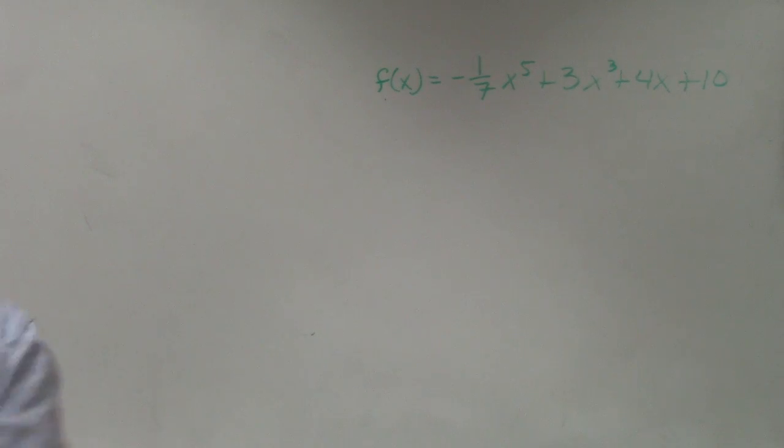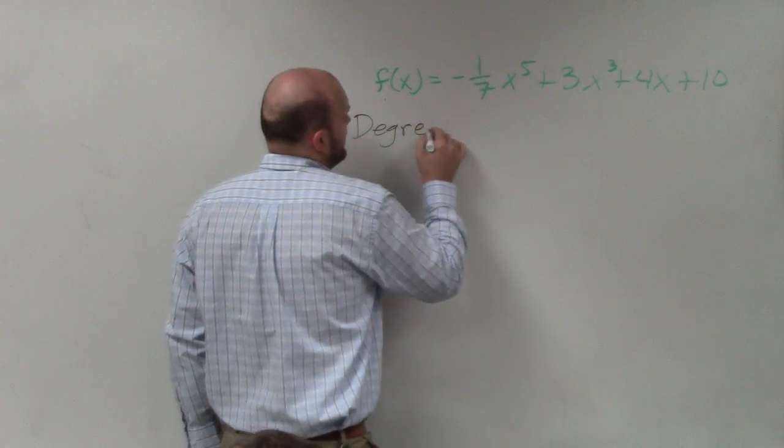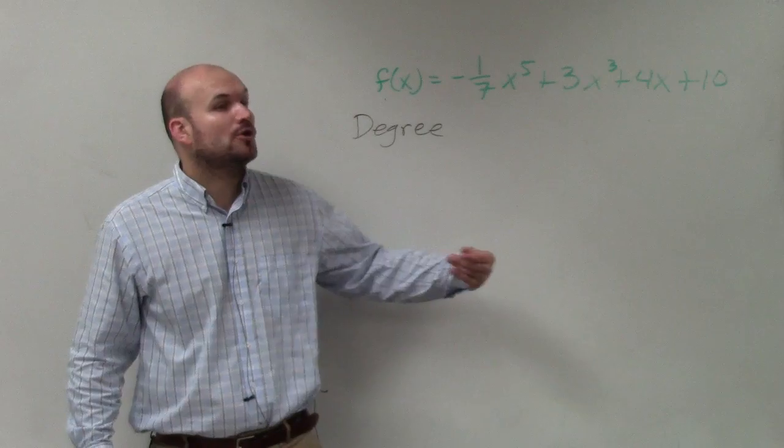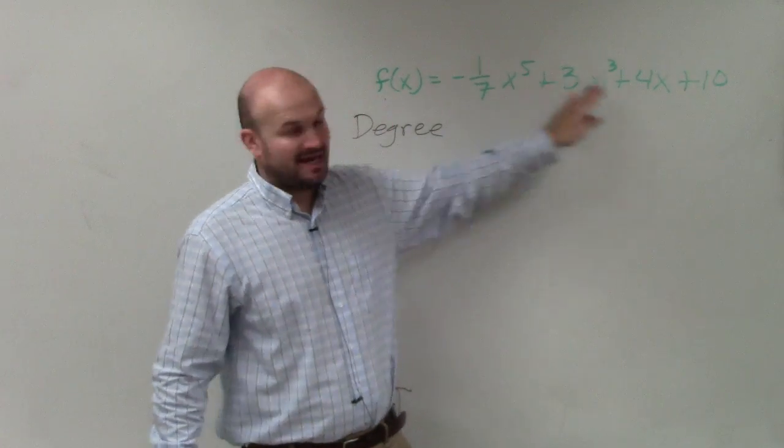In this example, what you're basically going to do is identify first the degree. To identify the degree, you have to make sure that your polynomial is in descending order, meaning you have the largest power first and then going down the line. That is correct.